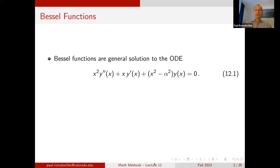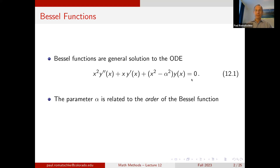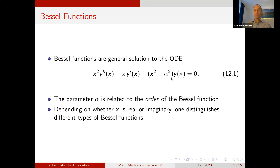Bessel functions are solutions to the following ordinary differential equation: x² y''(x) + x y'(x) + (x² − α²) y(x) = 0. The parameter α of this differential equation is related to the order of the Bessel functions, and we distinguish two types of solutions depending on whether the argument x is real or purely imaginary.